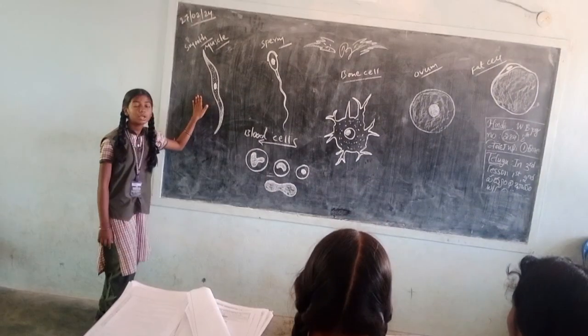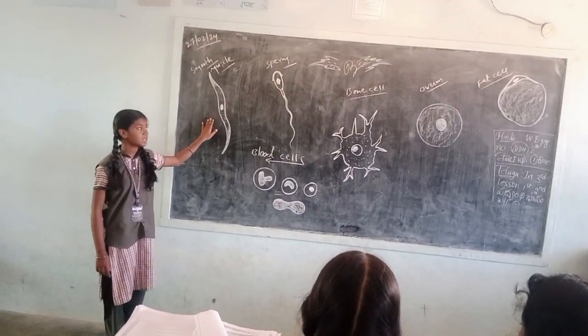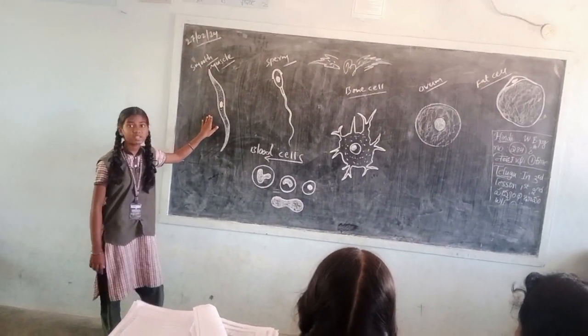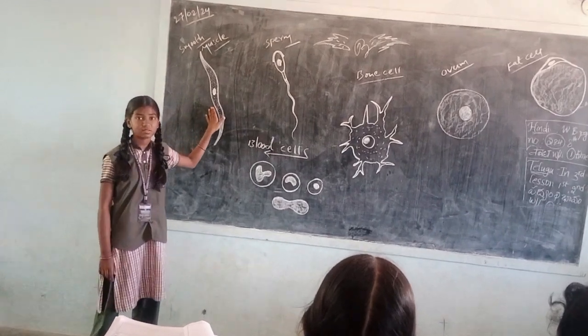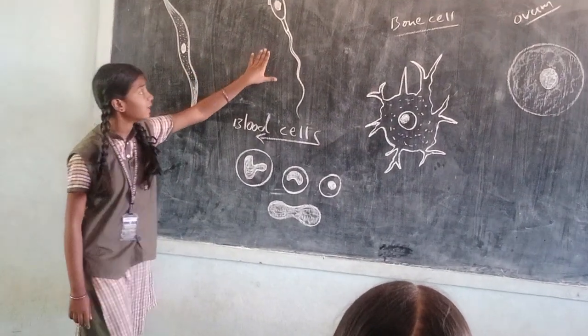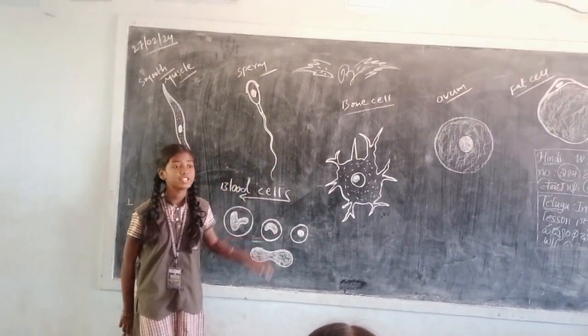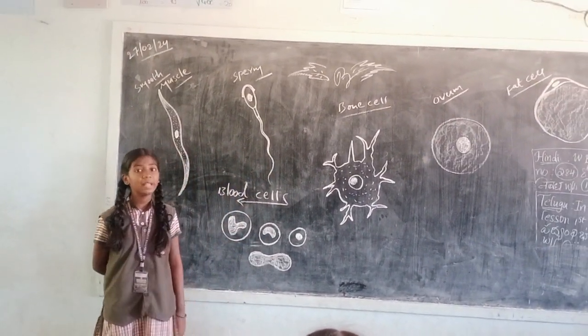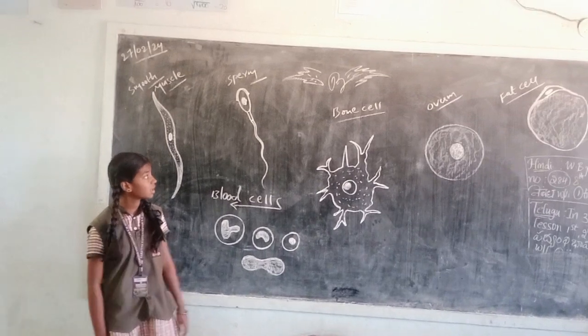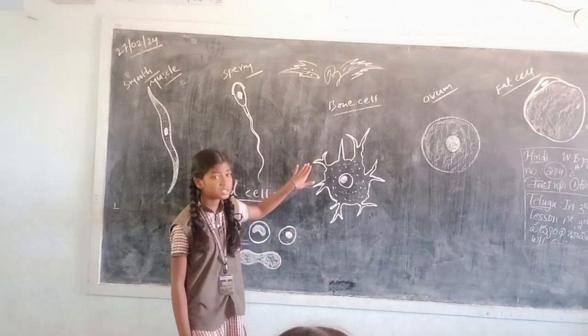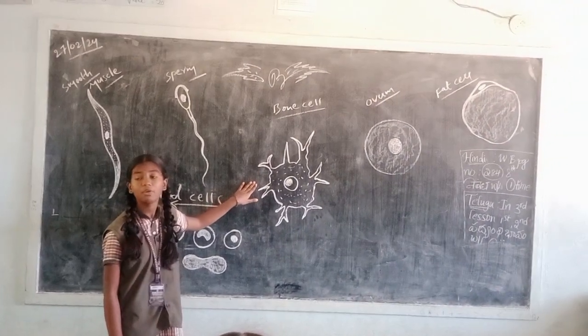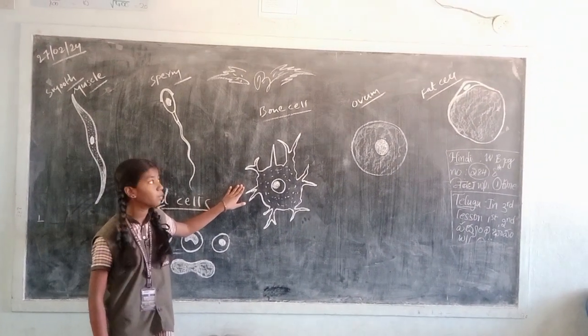The first one is smooth muscle cell which is present in the digestive system. The next one is firm cell which is present in the male reproductive system. This is the bone cell which is present in bones.